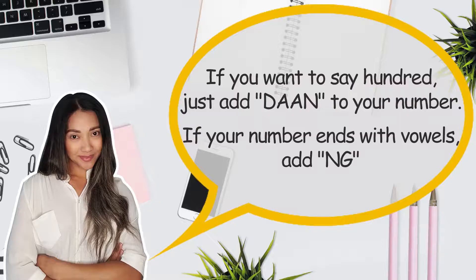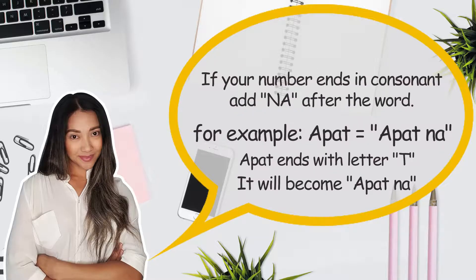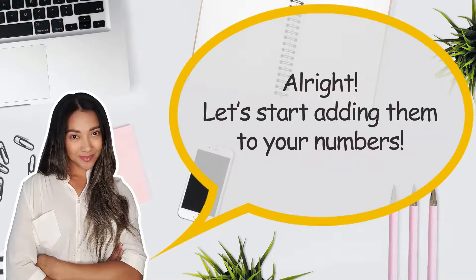If you want to say hundred, just add daan to your number. If your number ends in a vowel, add ng. For example, isa — isa ends in the letter A, so you add ng to the word: isang. If your number ends in a consonant, add na after the word. For example, apat — apat ends with the letter T, so it becomes apat na.